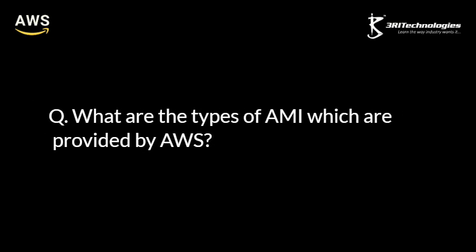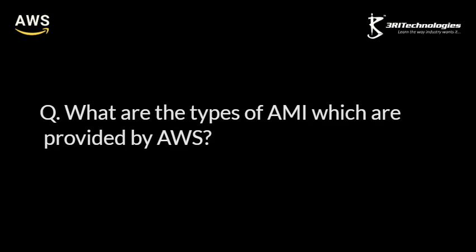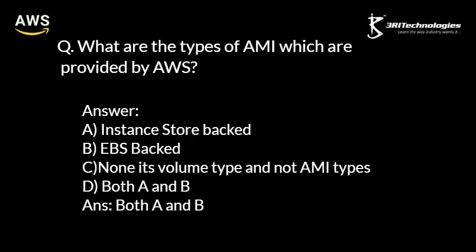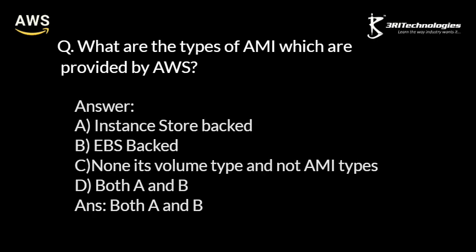What are the types of AMI provided by AWS? A. Instance Store-backed. B. EBS-backed. C. None — it's a volume type, not an AMI type. D. Both A and B. Answer: Both A and B.